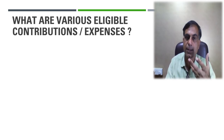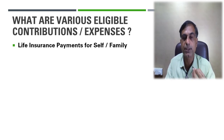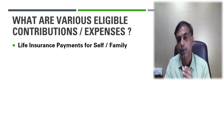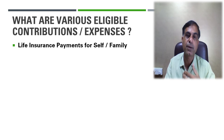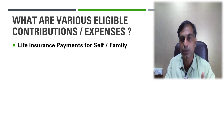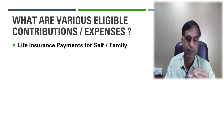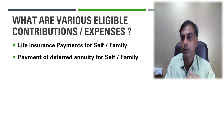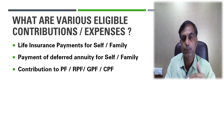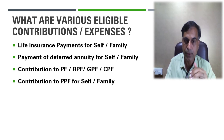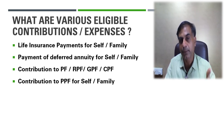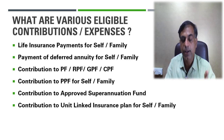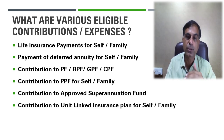What are the various eligible contributions and expenses? Life insurance premium payments for self and family are allowed — for an individual, that means spouse and children. Payment of deferred annuity for self and family is allowed. Contribution to provident fund, recognized provident fund, CPF, GPF are allowed. Contribution to Public Provident Fund for self and family is allowed under Section 80C. Contribution to approved superannuation fund is also allowed. Contribution to Unit Linked Insurance Plan for self or family member is also allowed.